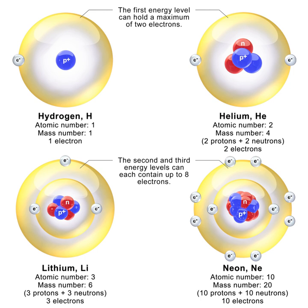The neutron plays an important role in many nuclear reactions. For example, neutron capture often results in neutron activation, inducing radioactivity. Knowledge of neutrons and their behavior has been important in the development of nuclear reactors and nuclear weapons. The fissioning of elements like uranium-235 and plutonium-239 is caused by their absorption of neutrons. Cold, thermal, and hot neutron radiation is commonly employed in neutron scattering facilities, where the radiation is used in a similar way one uses X-rays for the analysis of condensed matter. Neutrons are complementary to X-rays in terms of atomic contrasts by different scattering cross-sections, sensitivity to magnetism, energy range for inelastic neutron spectroscopy, and deep penetration into matter.